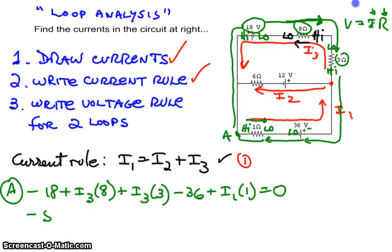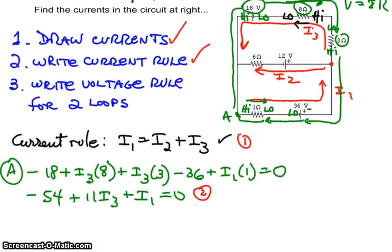Let's simplify that a bit. I got minus 54 plus 11I3 plus I1 equals 0. Well, that's my second equation. All right, let's move on to the next one here. I'll see if I can squeeze that in. Now I have to make loop B. And I'm going to make loop B here. I'm going to start here and go around the upper term.